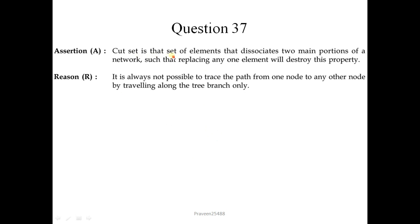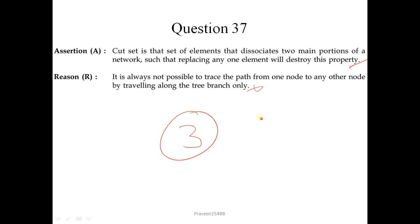Question number 37: The cut-set is that set of elements that dissociates two main portions of a network such that replacing any one element will destroy this property — this assertion is correct. However, it is not always possible to trace a path from one node to any other node by travelling along tree branches only — this reason is not correct. So the correct option is 3 (A is true but R is false).